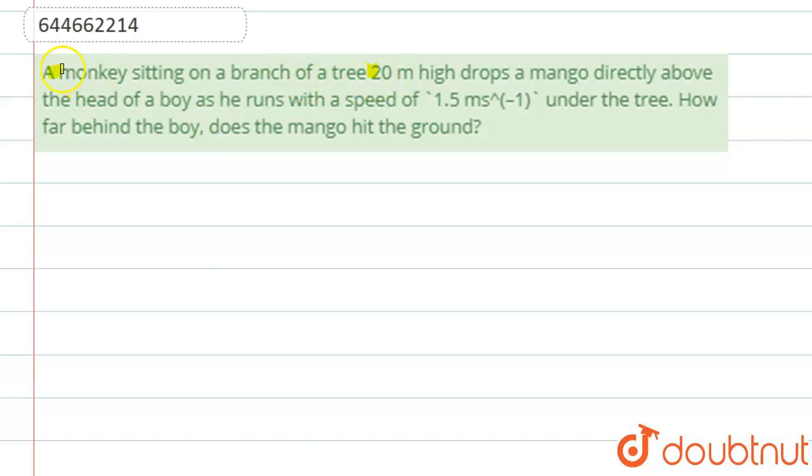The question says that a monkey is sitting on a branch of a tree which is 20 meters high and drops a mango directly above the head of the boy as he runs with a speed of 1.5 meters per second under the tree. How far behind the boy does the mango hit the ground?